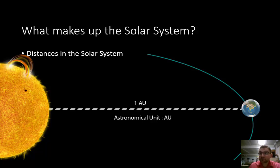So you can see in this picture where one astronomical unit represents the distance between the Earth and the sun.